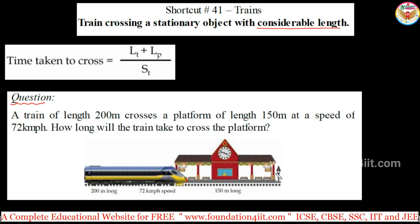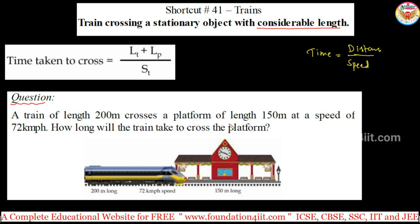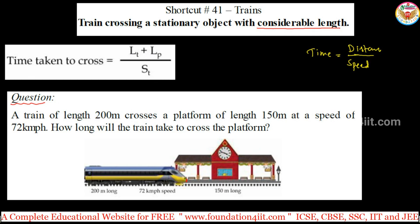The entire train should cross the platform and come out from the other edge. So the length of the platform and the length of the train together are taken as the total distance. Time equals distance divided by speed. In place of distance, we take the length of the train plus the length of the platform — Lt plus Lp — whether it's a platform or a bridge, as mentioned in the question.